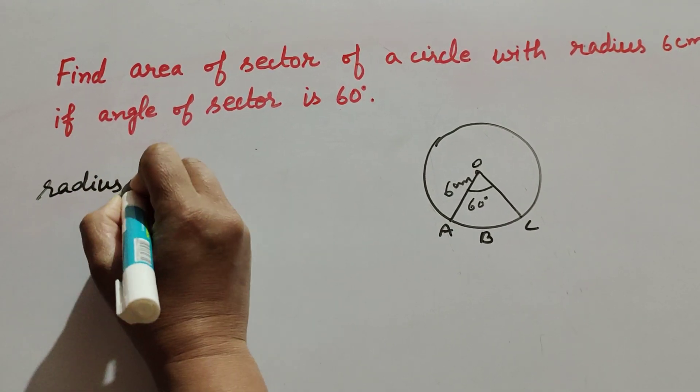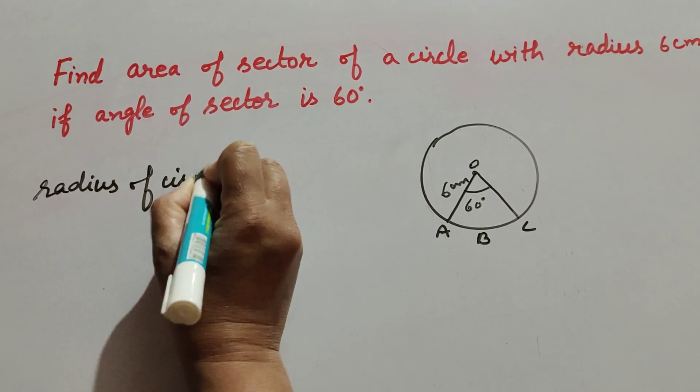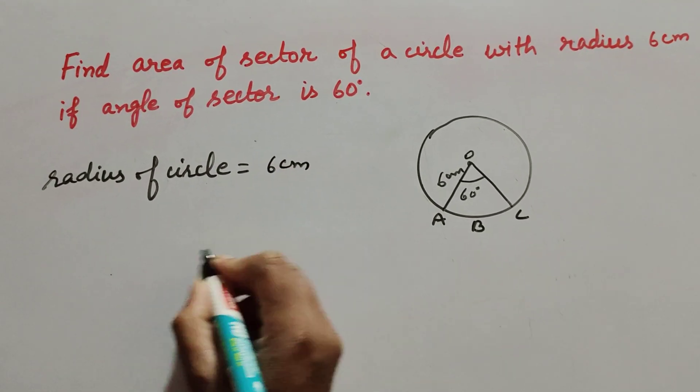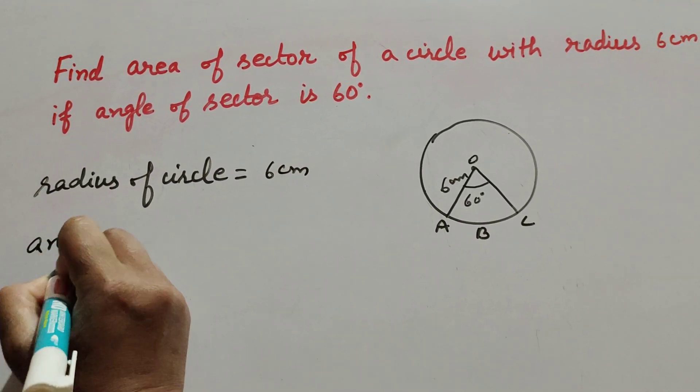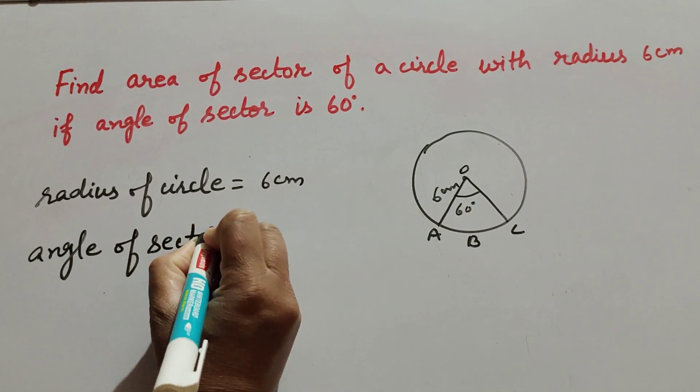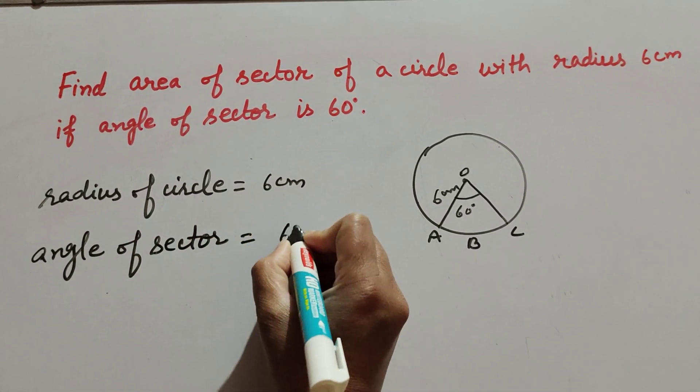Given is radius of circle, it is equal to 6 cm, and angle of sector, it is equal to 60 degrees.